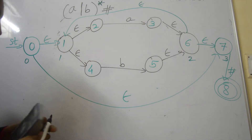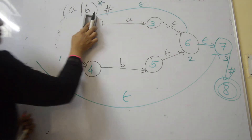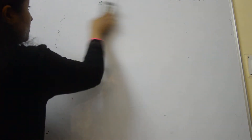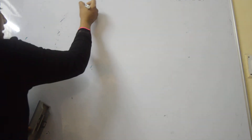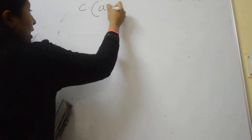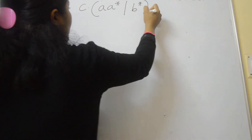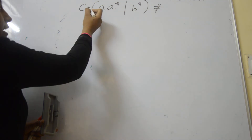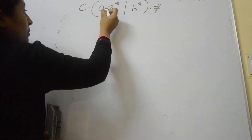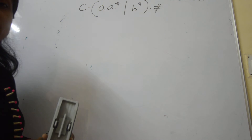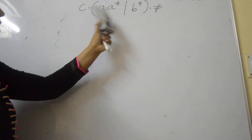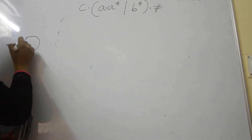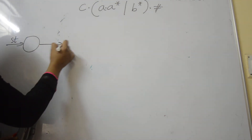Let us take one more example. Here there is a concatenation, and also a concatenation between A and A*. For the ordering of evaluation, this concatenation is evaluated first, so the start state begins directly with symbol C.